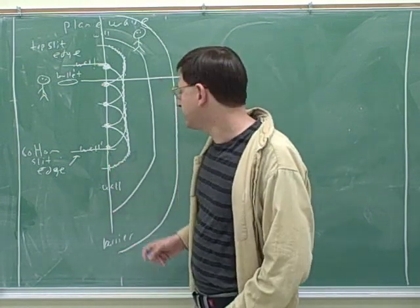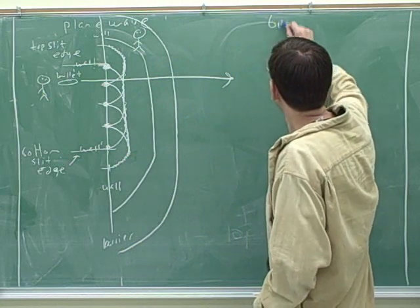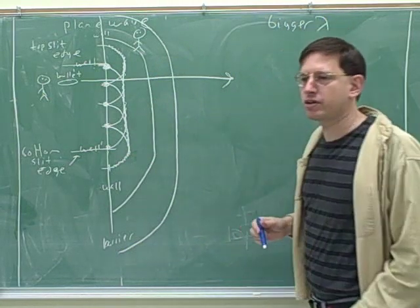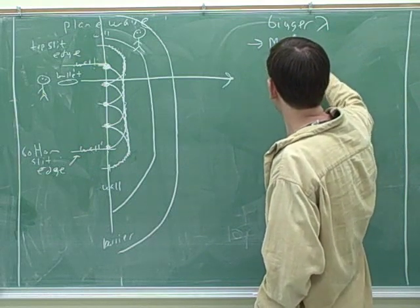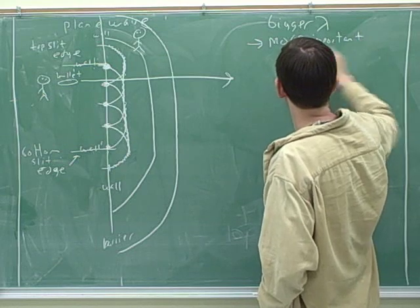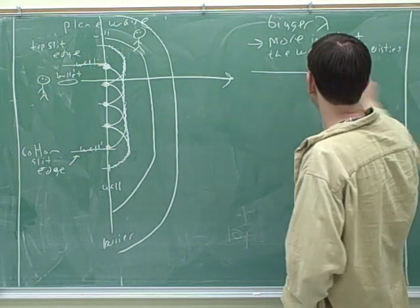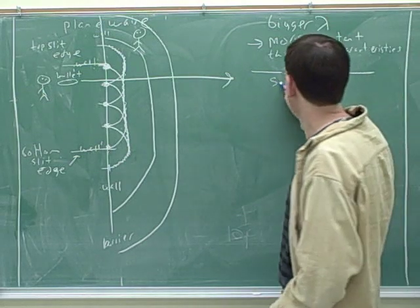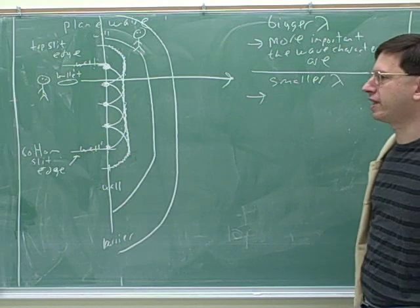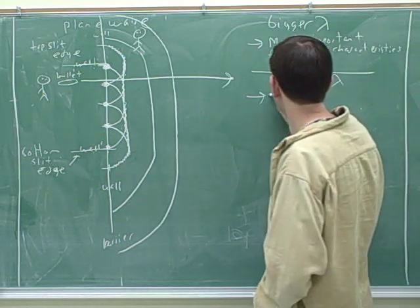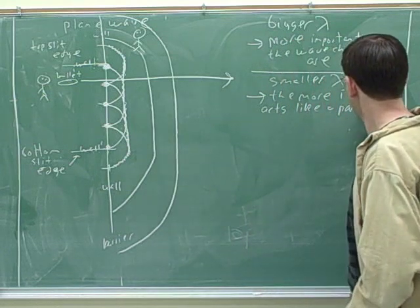So you have to keep in mind what the different characteristics of a particle and a wave are. When is this bending important? This is only important when the wave has a lot of wave characteristics to it. It turns out that the bigger the wavelength, the more important the wave characteristics are. The smaller your wavelength, the less important the wave characteristics are. The smaller the wavelength, the more something acts like a particle.